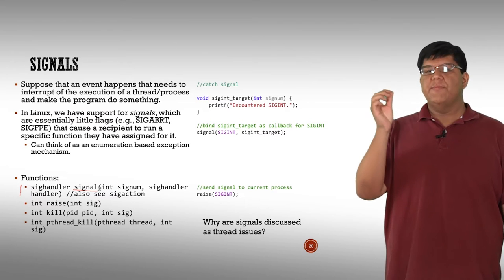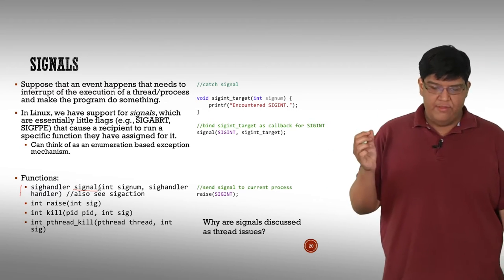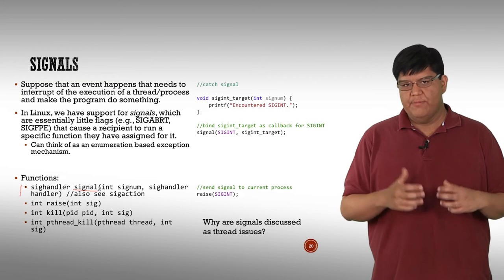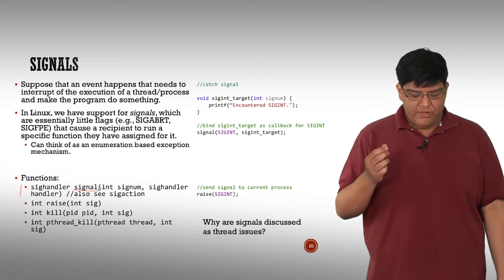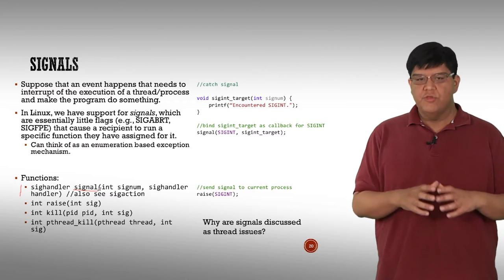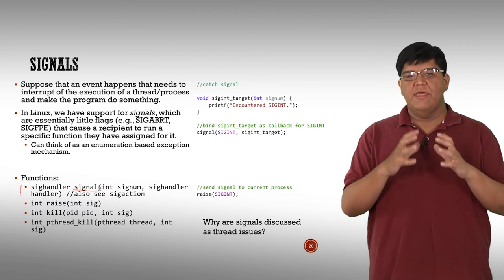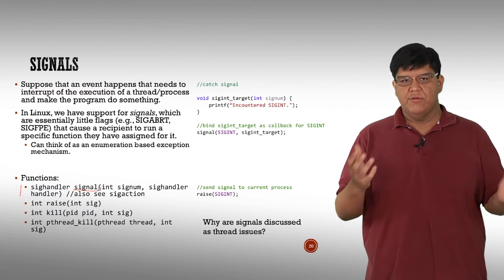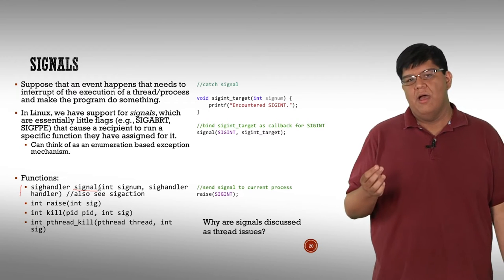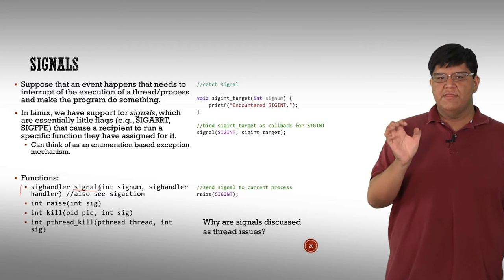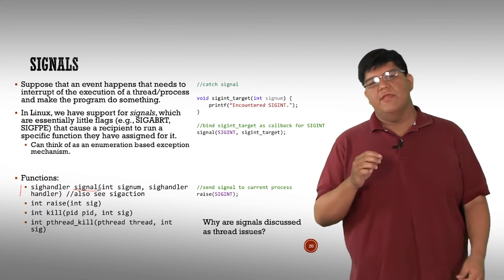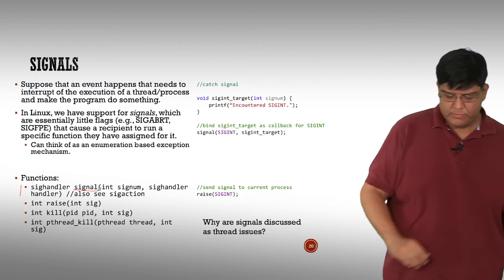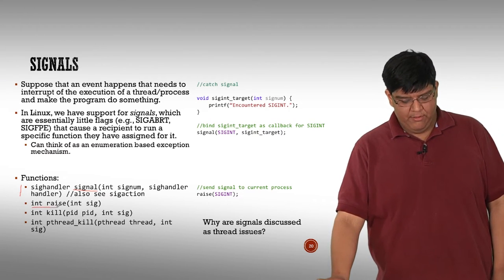The recipient of a signal needs to have that handler set up. The second function we have is `raise`. What `raise` does is send a signal to the current process. Remember, there may be a bunch of threads all associated with the same process. When you call `raise`, you're broadcasting the signal to that process context, and some other thread — maybe even the main process — will pick up that signal and react to it. You can think of `raise` a little like `throw` in Java: when you throw an exception, you're starting that chain of events, pushing the error message upward until somebody catches it.